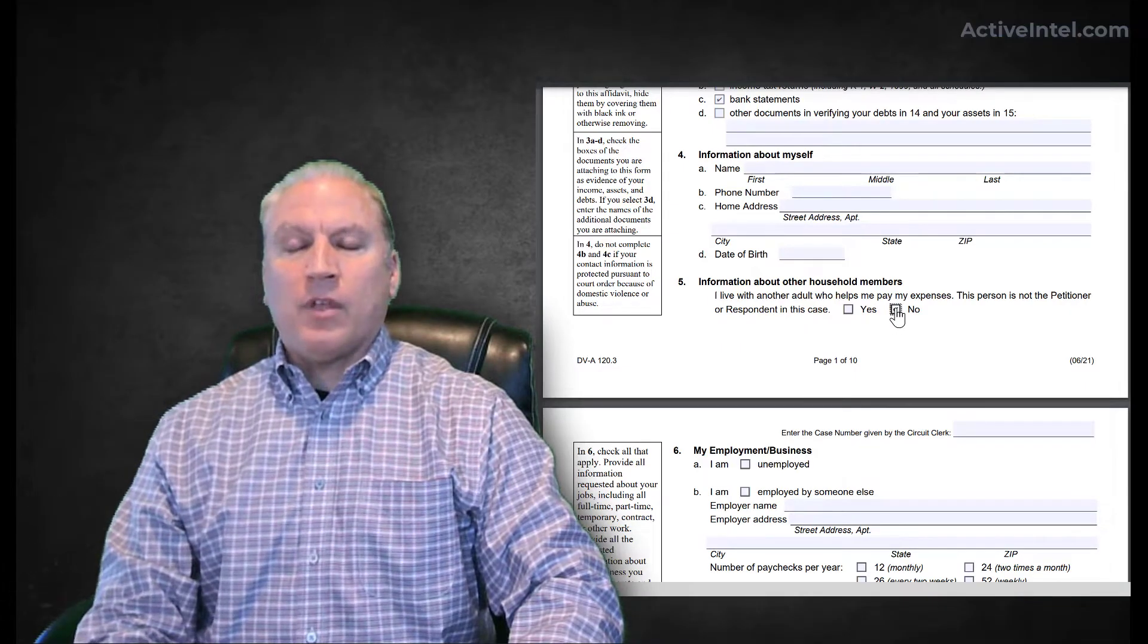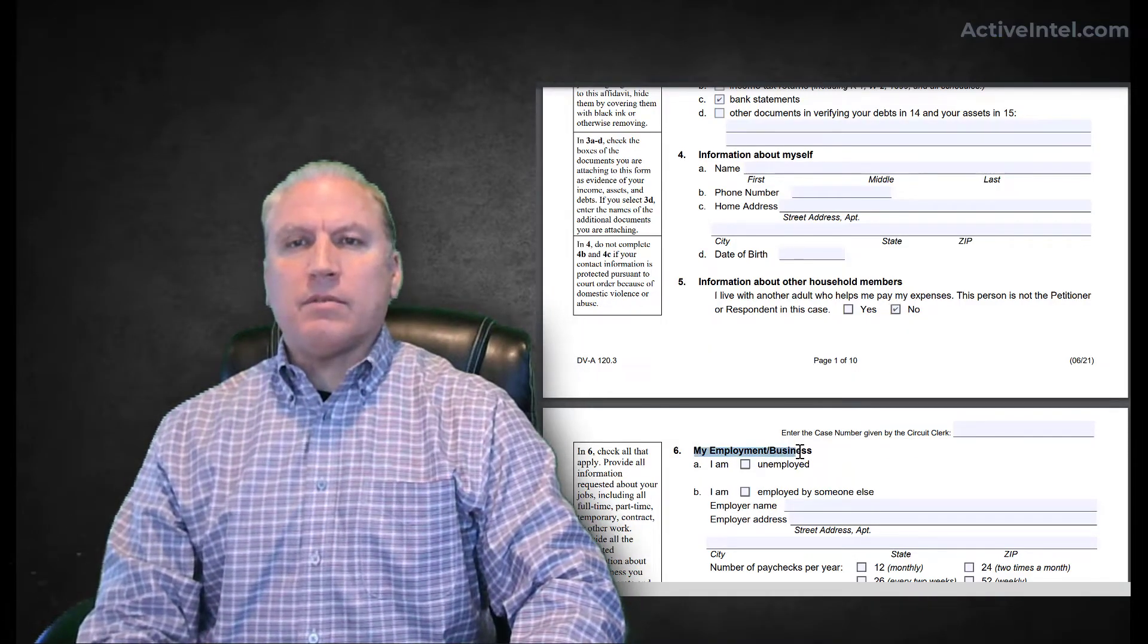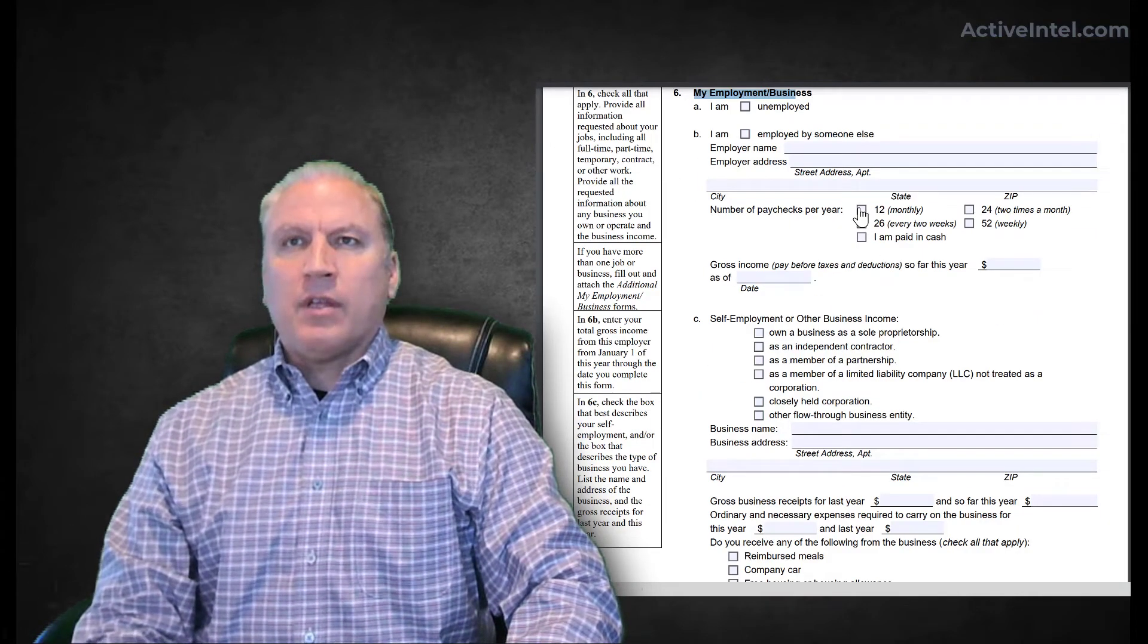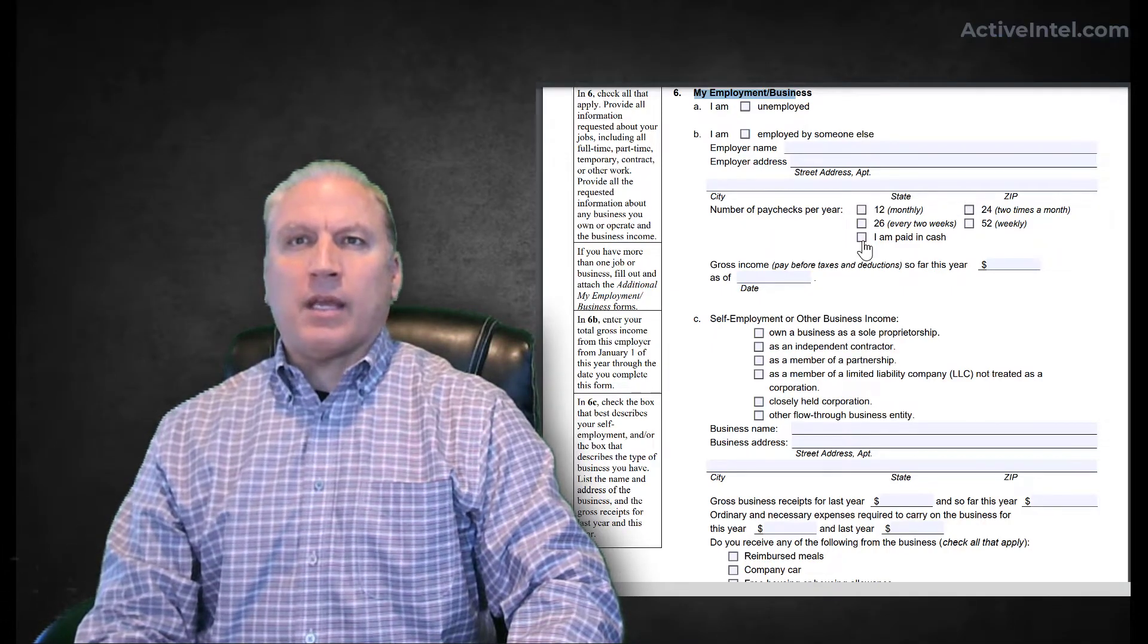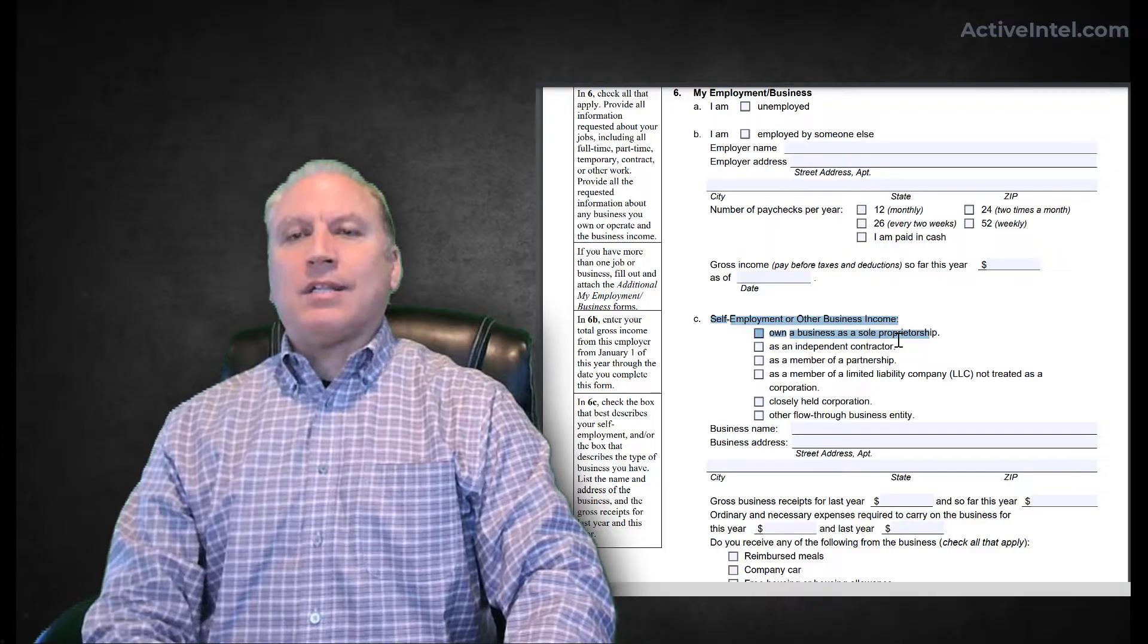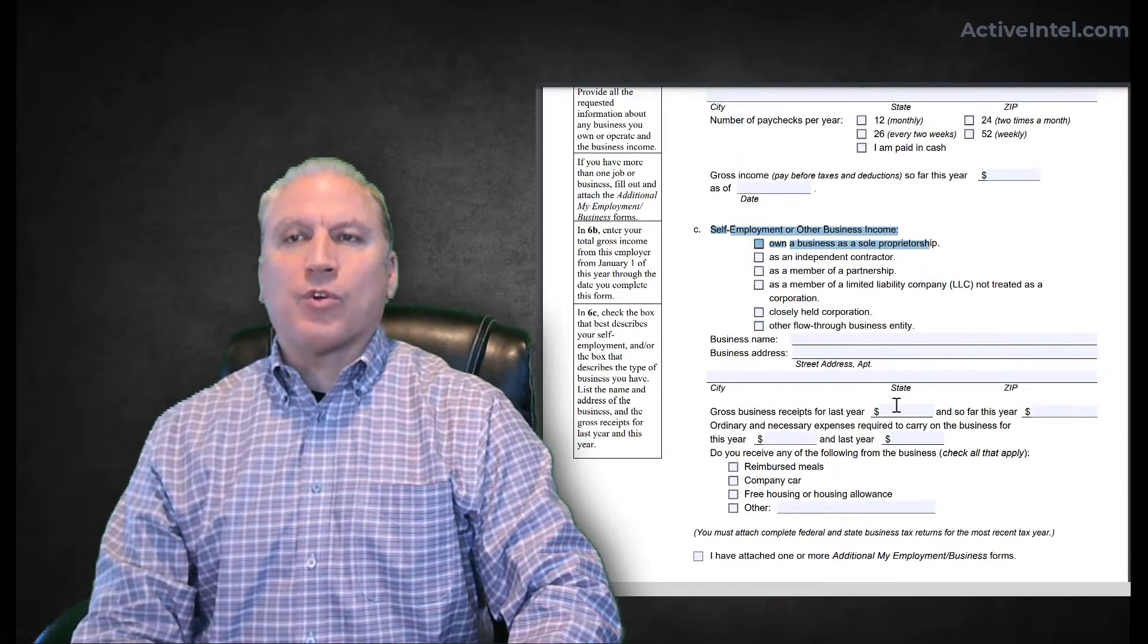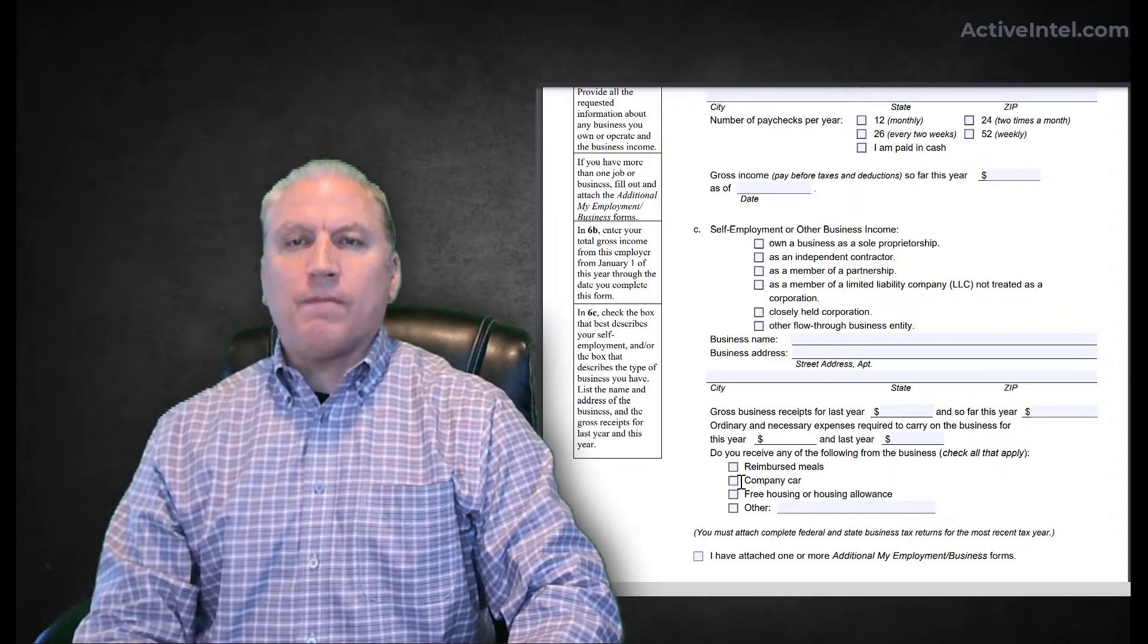If they say no, they do not live with somebody else, you may want to verify that to see if they lied. Employment: self-employed, unemployed, information about your paycheck—is it every month, every two weeks, every week, paid in cash? What's your income? Self-employment: this is important. If a person claims to be self-employed, they can't just say they didn't make any money. They have to put down their gross receipts for the last year, how much this year, what their expenses are, if they receive a company car, any kind of stipends or benefits.